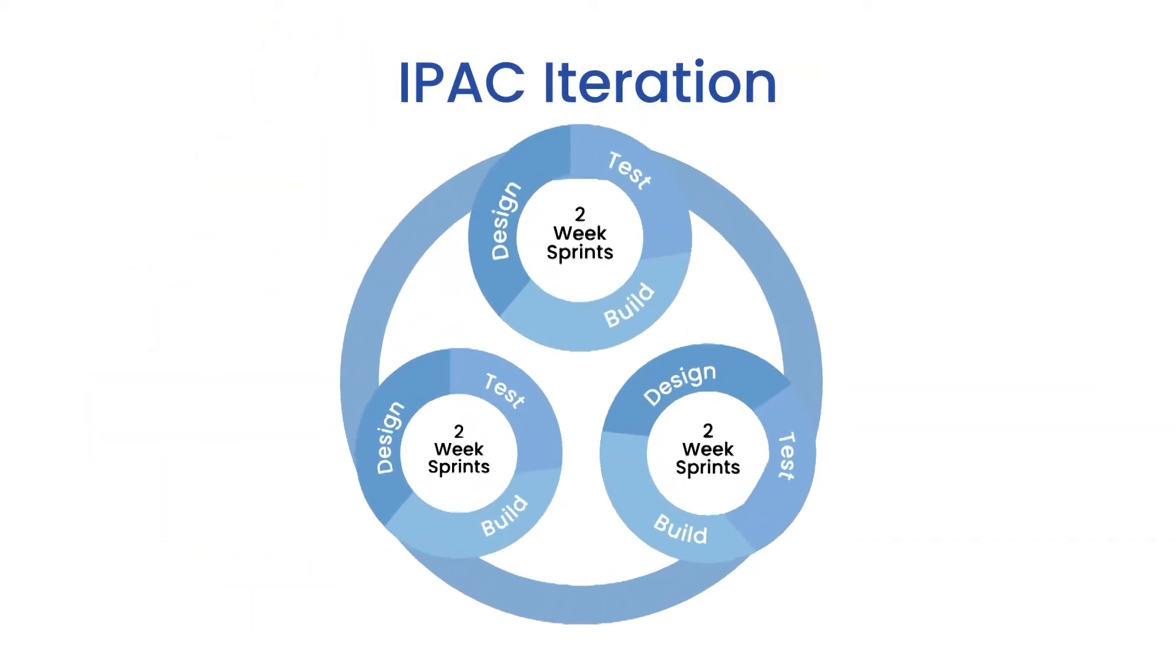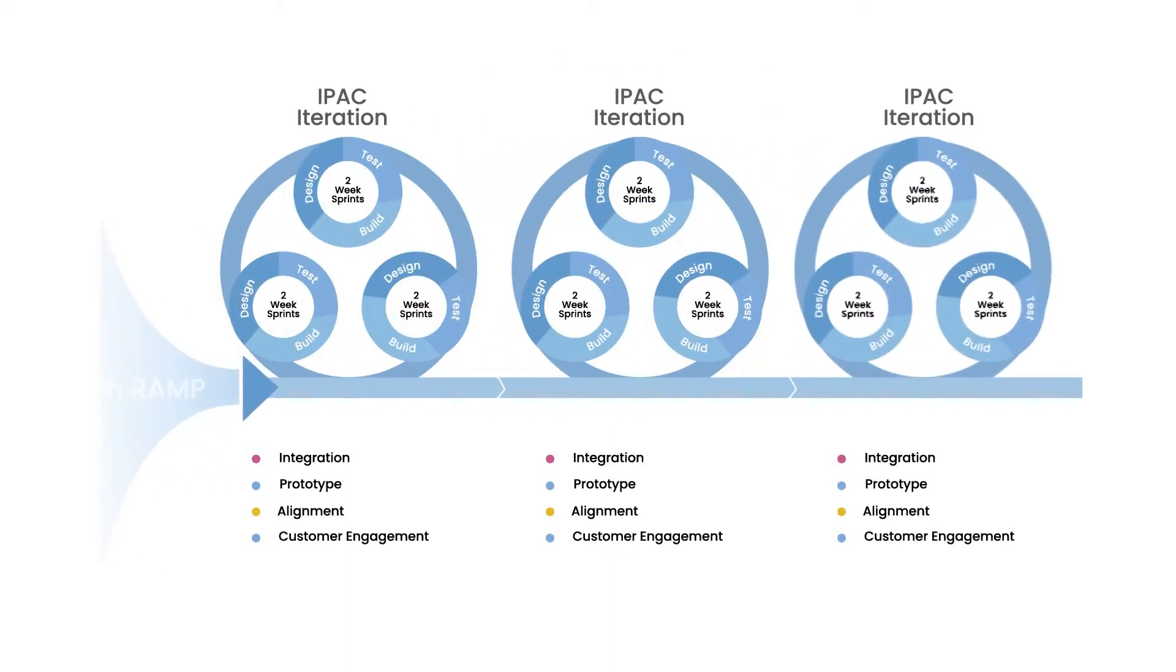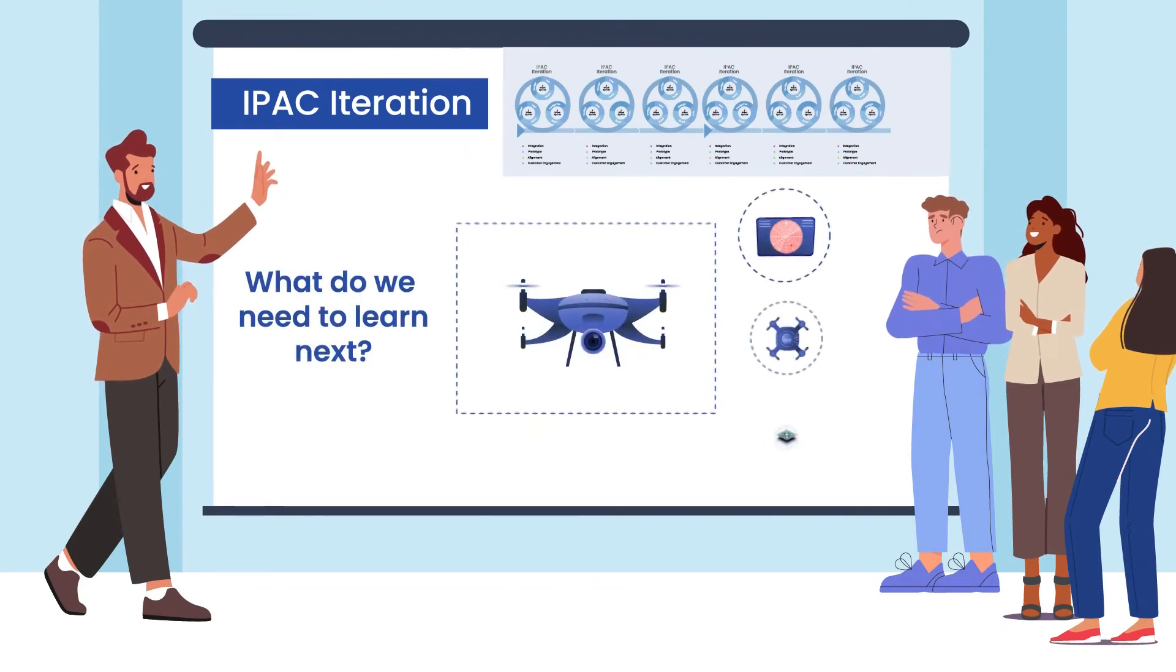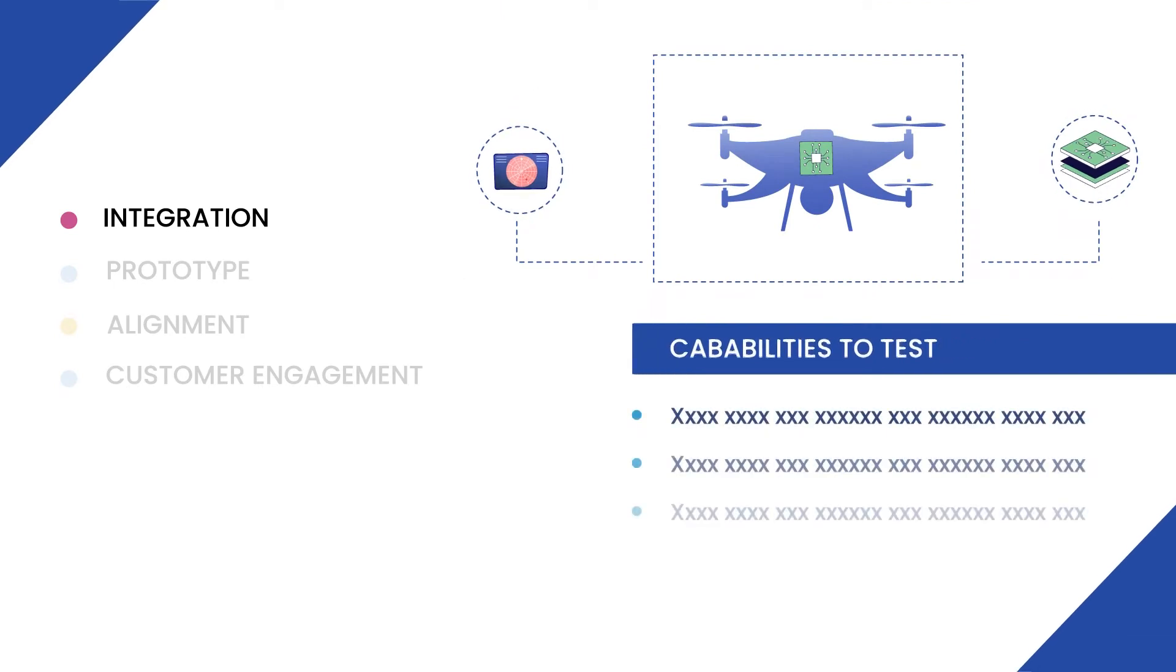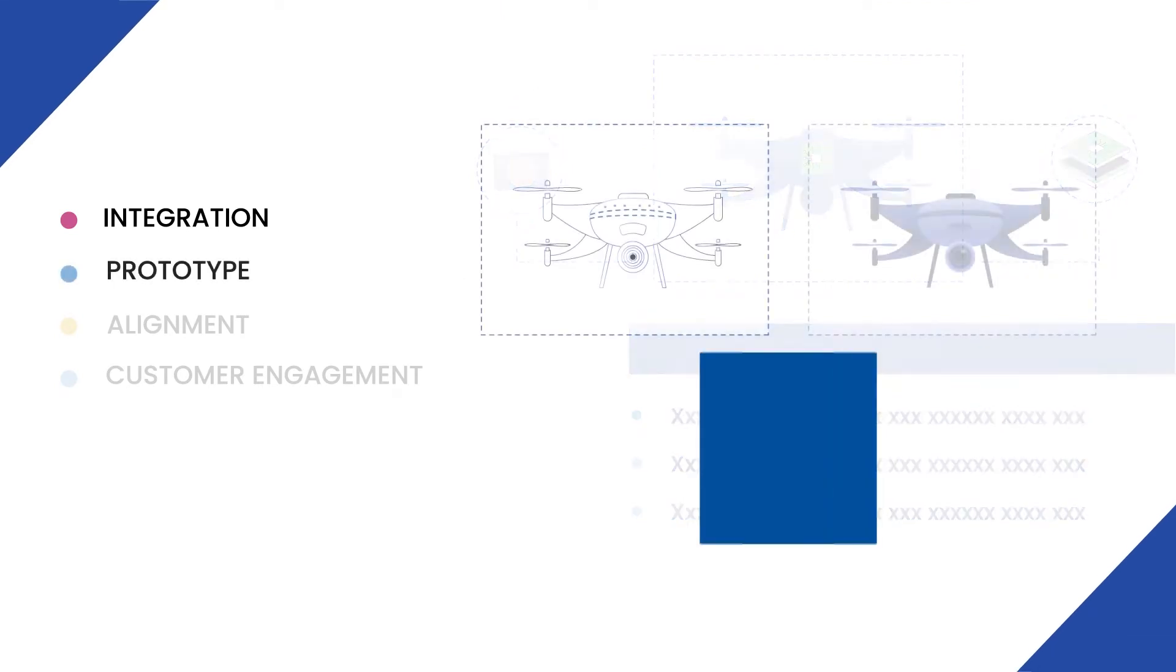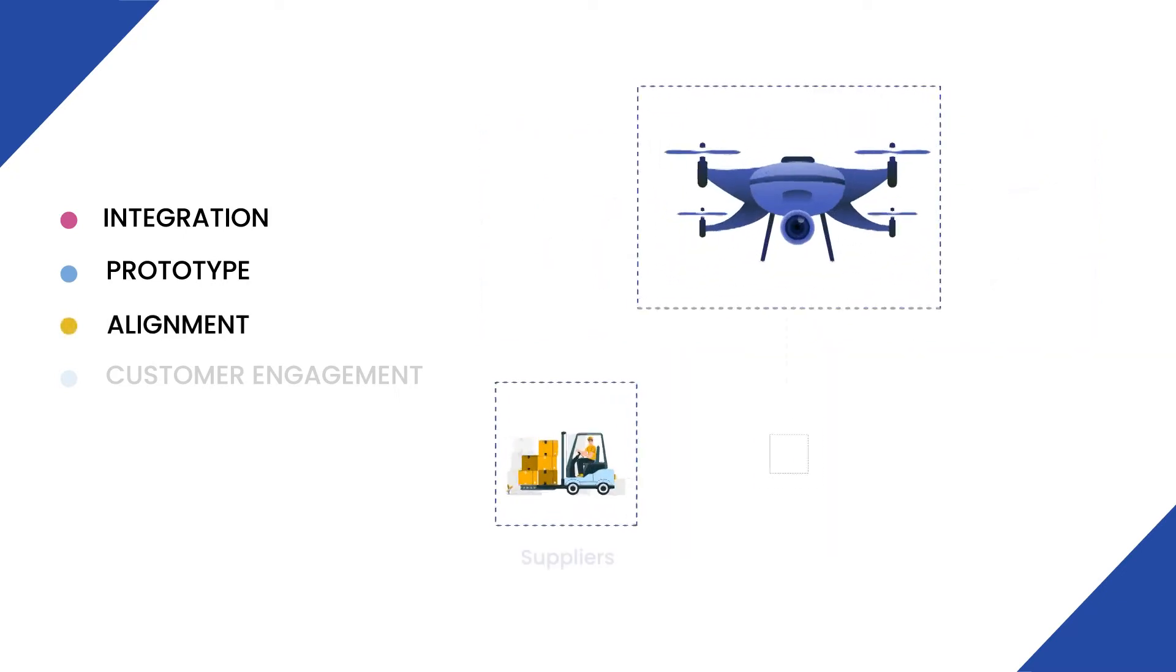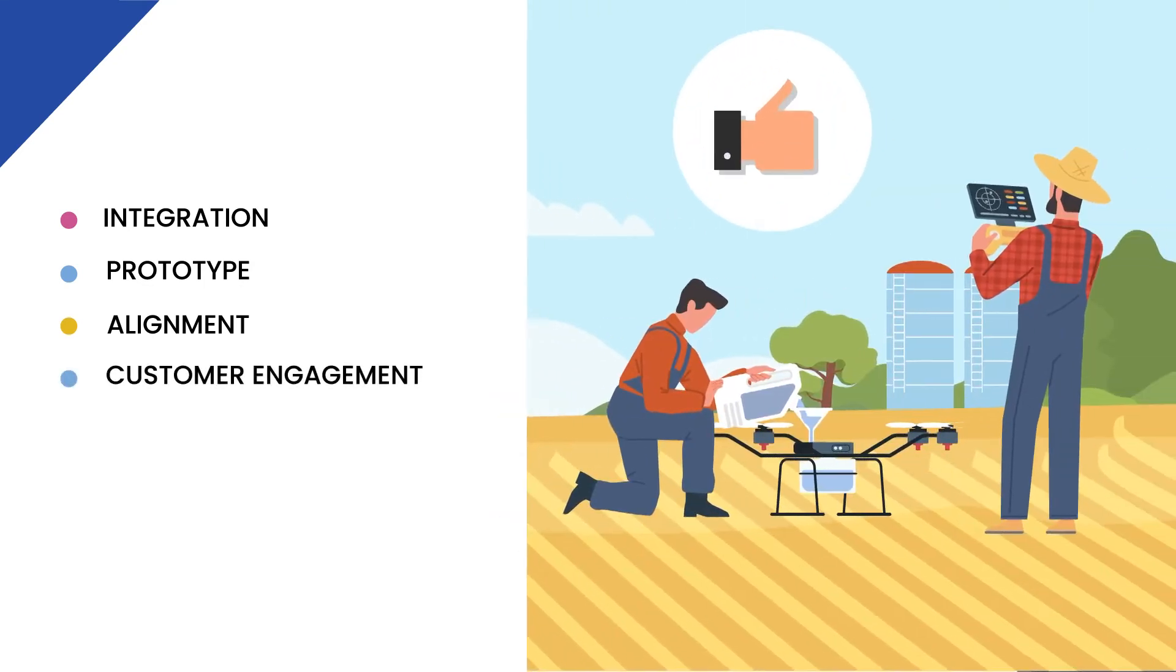At the core of the MAD framework, the flexible iteration plan guides the team toward project success. With each IPAC iteration, teams work toward a vertical slice of the system and establish milestones to integrate electrical, mechanical, software, and other elements. Work toward a demonstrable outcome as some form of prototype. Build alignment with all stakeholders, including external suppliers, and gain valuable feedback from customers.